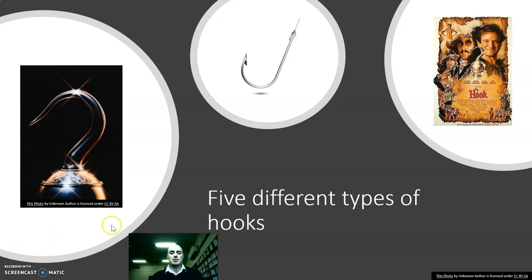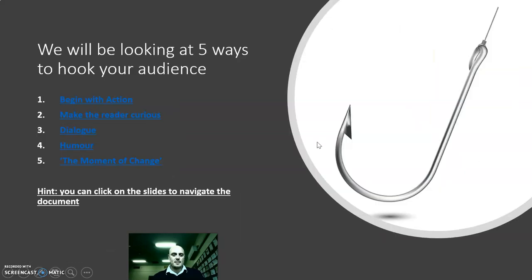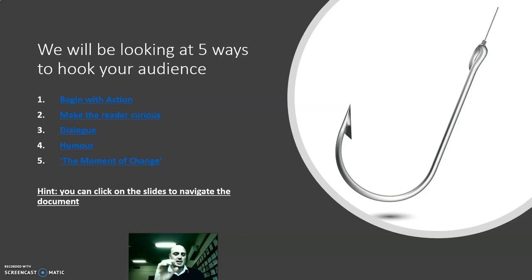Today we're going to go through five different ways of creating hooks — hooking your audience at the start — so making them engage with your writing. Here are five different ways to do that: you can begin with action, make the reader curious, use dialogue, use humor, and look at the moment of change.